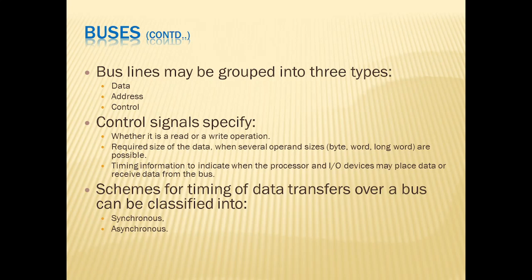Control signals specify certain operations — whether it is a read or a write, and what the size of the data being sent is, whether it is in the form of a byte, word, or long word. Control signals also specify timing information to indicate when the processor and I/O devices may place data on or receive data from the bus.